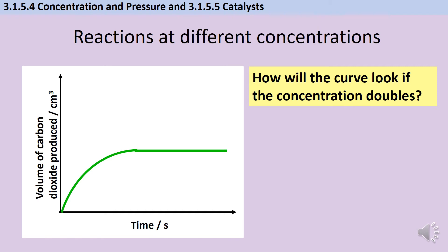In the temperature video, we looked at how the progress of a reaction might be shown on a graph like this one, and looked at how that graph would look different if you increased the temperature. We've got the same starting graph here, but how would this one look different if we doubled the concentration?